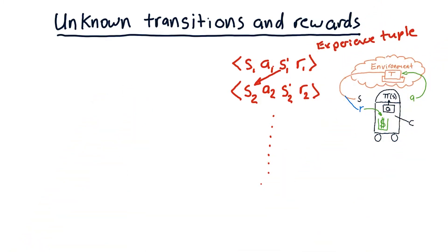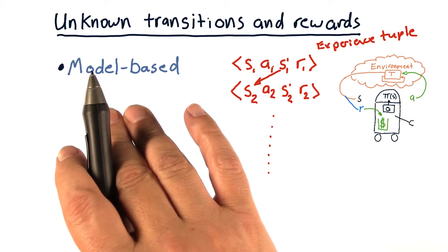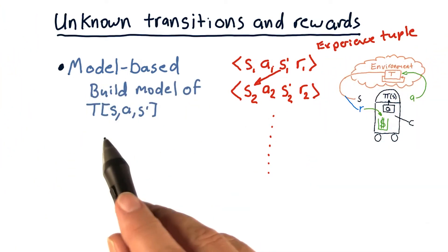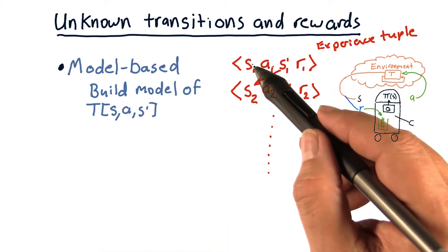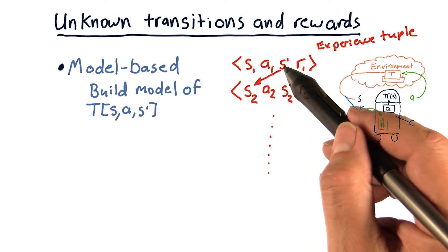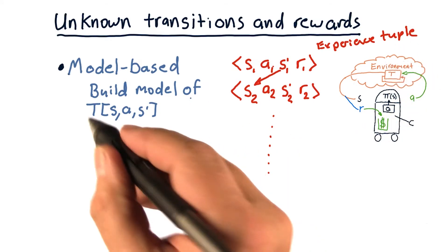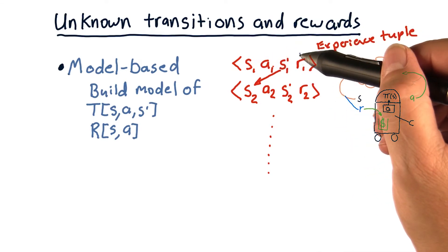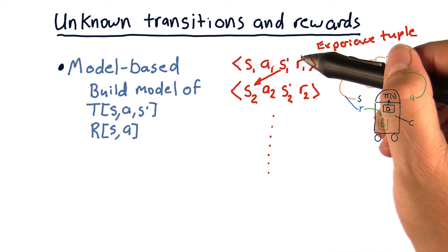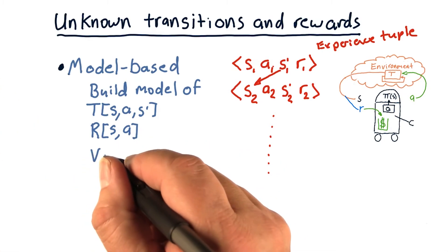If we have this trail of experience tuples, there are two things we can do with them to find the policy pi. The first set of approaches is called model-based reinforcement learning. We look at this data over time and build a model of T by looking statistically at these transitions — every time we were in a particular state and took a particular action, we see which new states we ended up in and build a tabular representation. Similarly, we build a model of R by averaging the reward across all instances of being in a particular state and taking an action. Once we have these models, we can use value iteration or policy iteration to solve the problem.